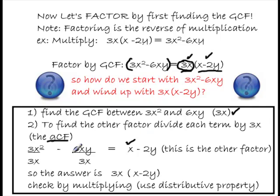Then I take 6xy and divide it by 3x. 3 goes into 6 twice. The x is canceled, and I'm left with y. So, x minus 2y, this is the other factor. I'm going to put a parentheses around it.